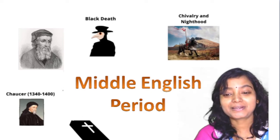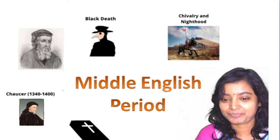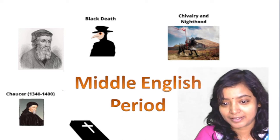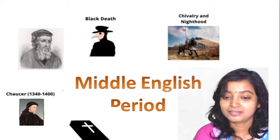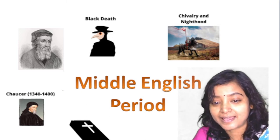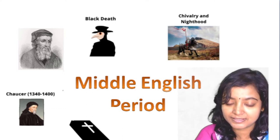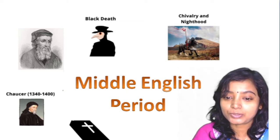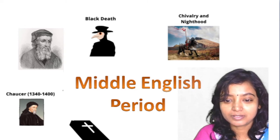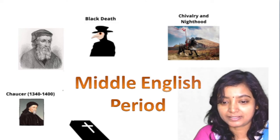We are going slow but steady. We have completed the Old English period, covering step by step the chronological history from early times: prehistoric Britain, the geographic origin of Britain, the early inhabitants, its language, and finally its literature. In the playlist 'History of English Literature,' there are a total of 12 videos on the history of Old English literature, and now we will go to the Middle English period.